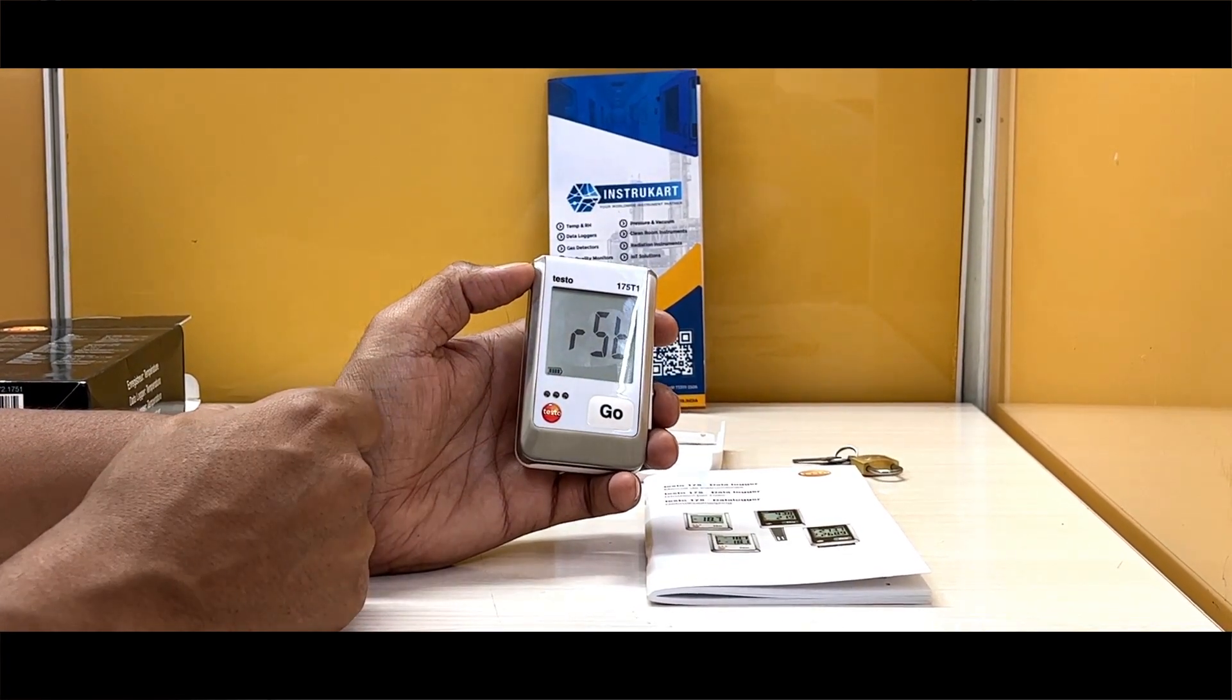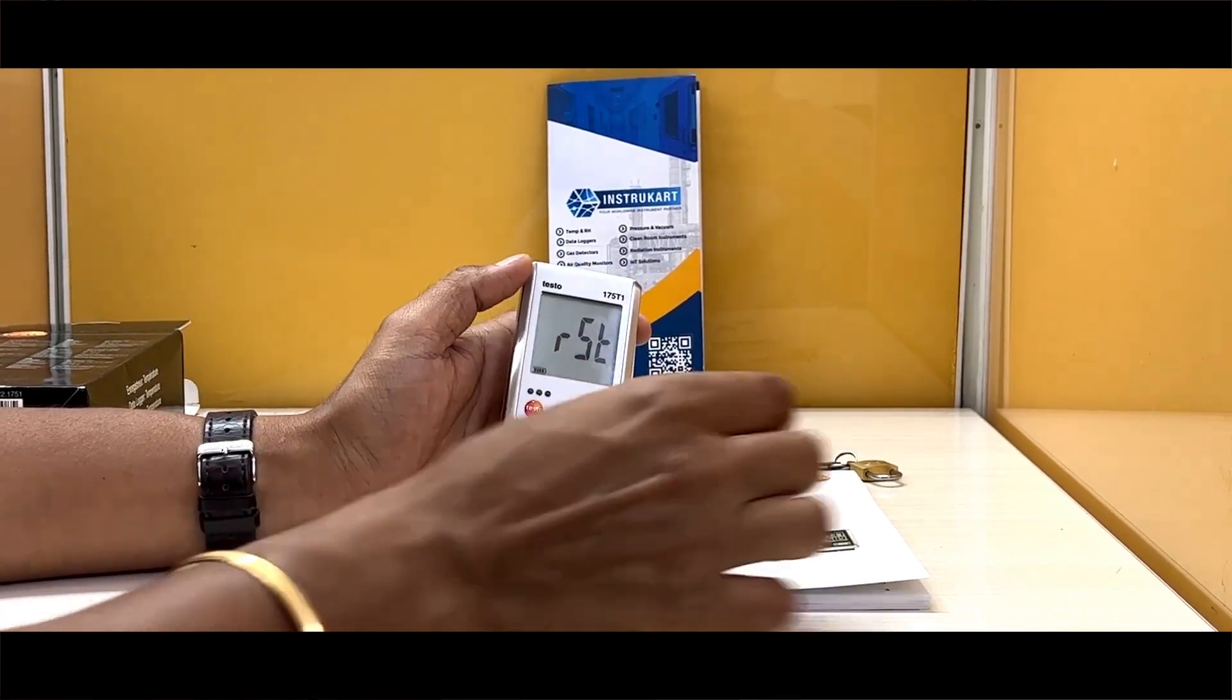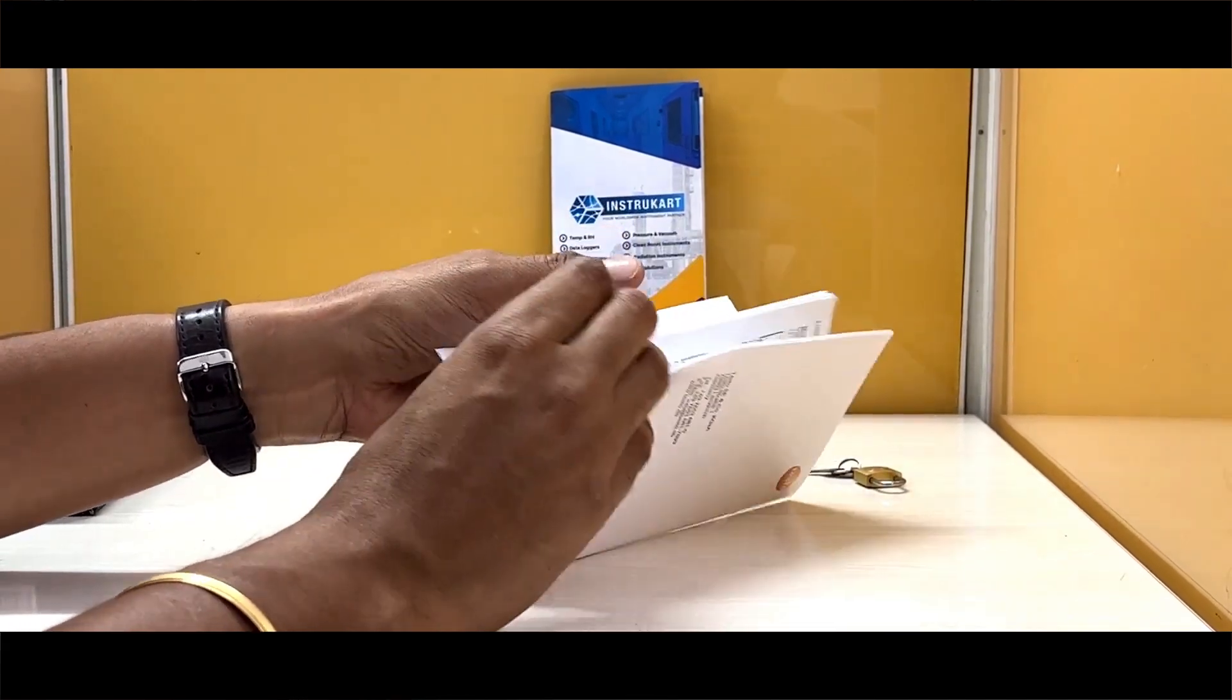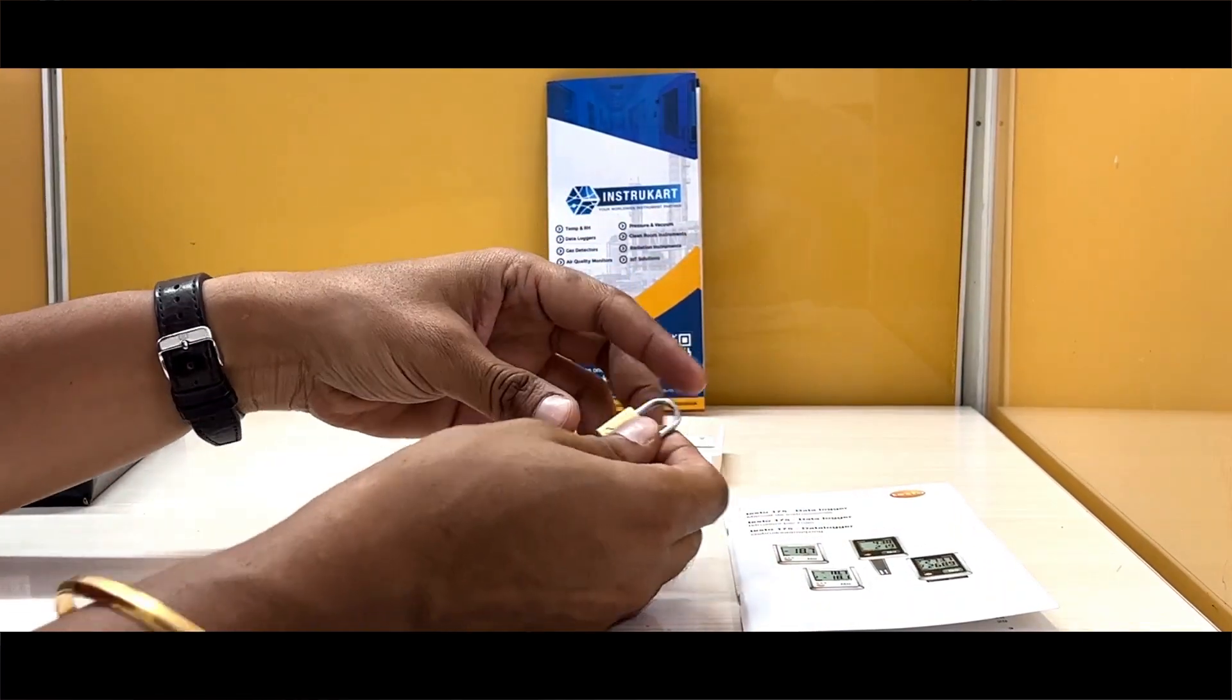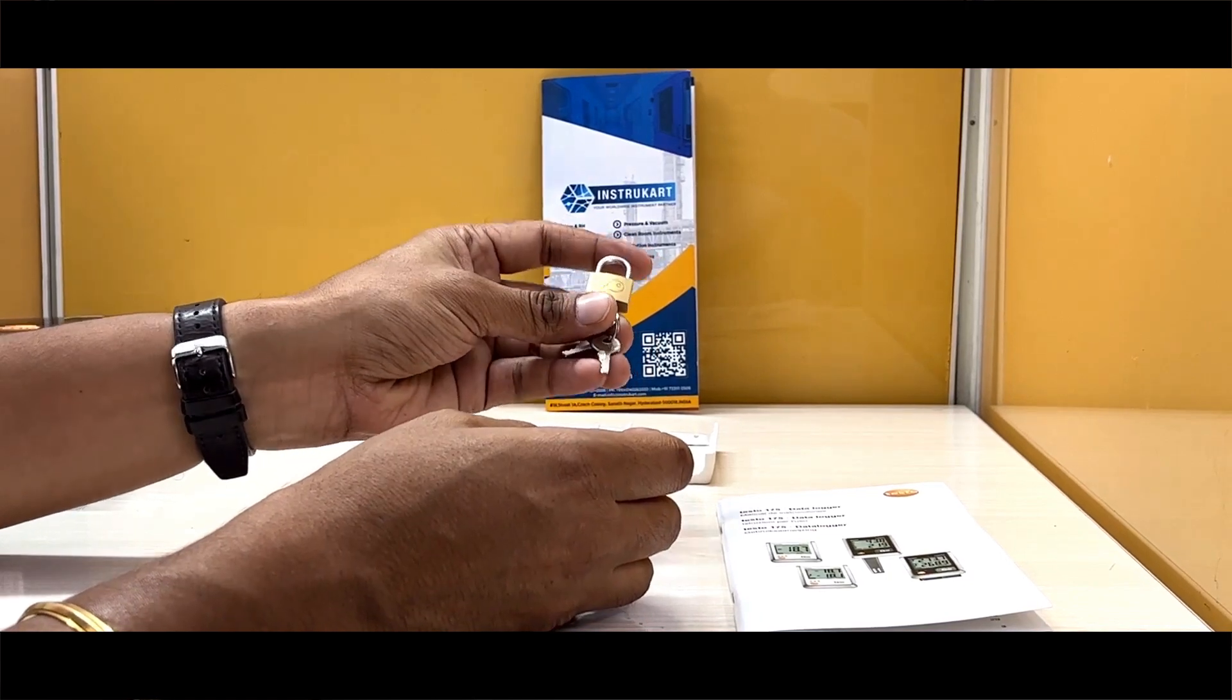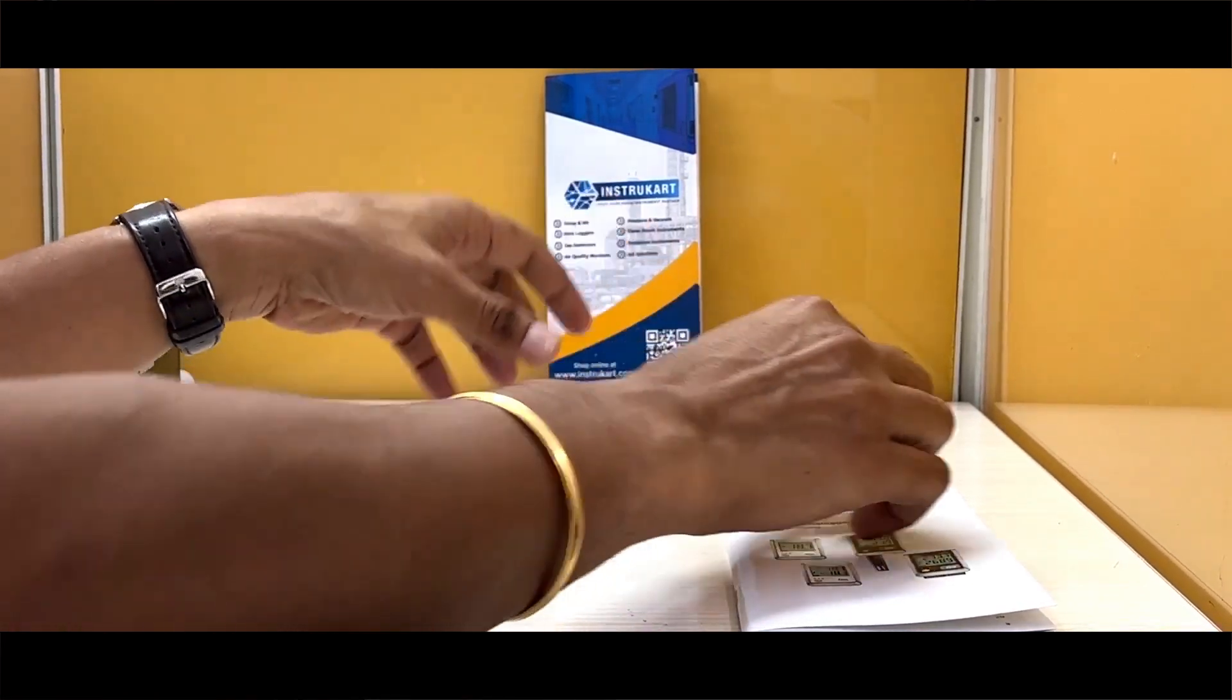The error codes are explained in this manual showing what operation has to be taken care of. It also comes with a lock just in case the supervisor wants to have control over the data logger, and whenever they want to access the data logger, they can take it.